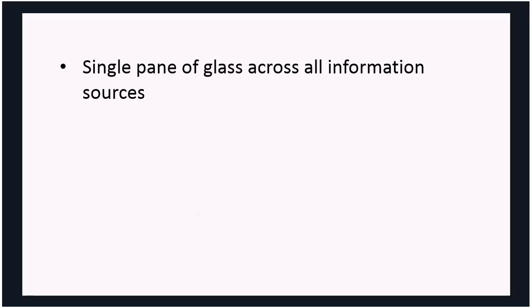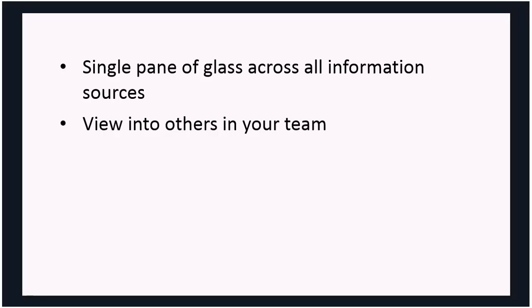Let's have a quick overview of what Delve is. Think of Delve as a single pane of glass across all information sources — it allows you to look across your team sites, emails, and Yammer conversations in one screen. Much of it can't be configured; it uses something called the Office Graph and allows users to see not only their own information but also that of other team members. Think of it like recent documents — the more you work on information, the higher priority the machine learning algorithm assigns it in Delve.